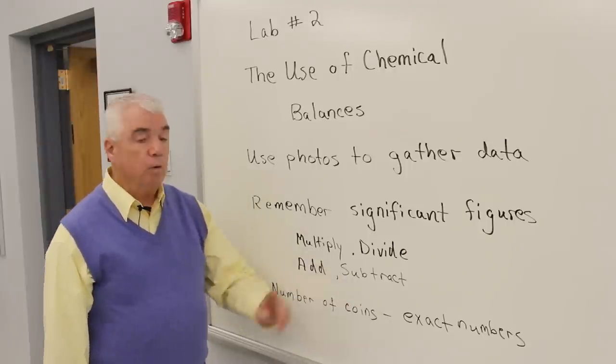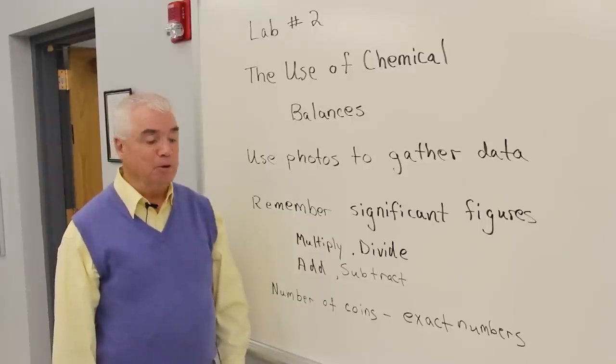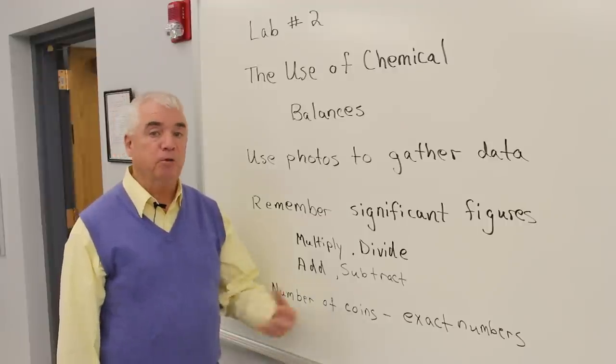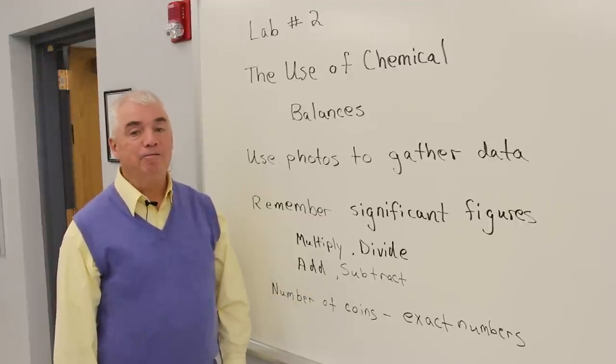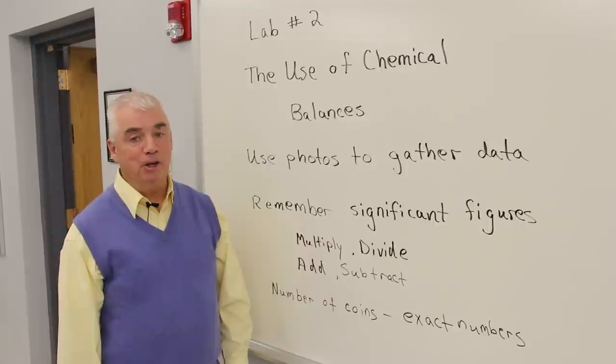And because we're very sure of those numbers, they're called exact numbers. And when you've got an exact number, like three coins, it has an infinite number of significant figures.